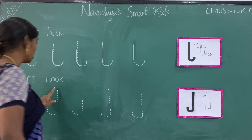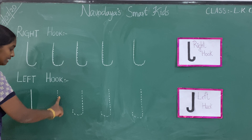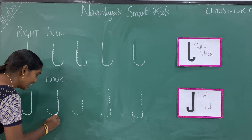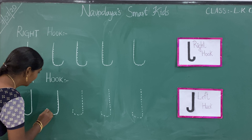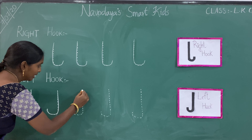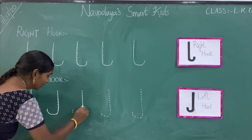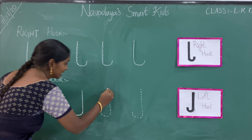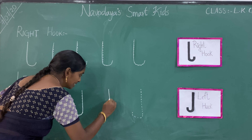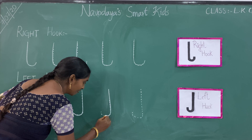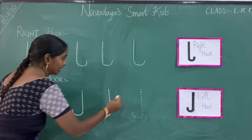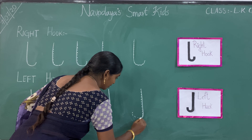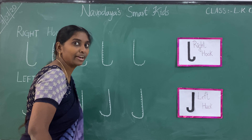We have some dots here. Now we join the dots. It makes a left hook. Look at the board children. See here. This is left hook.